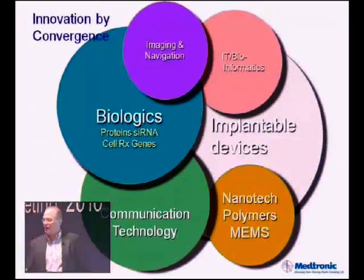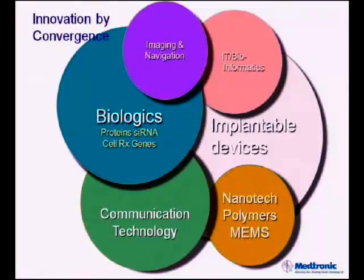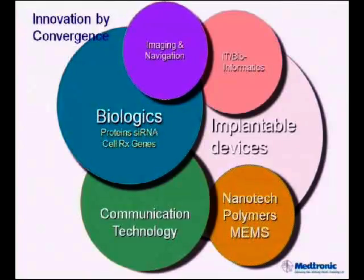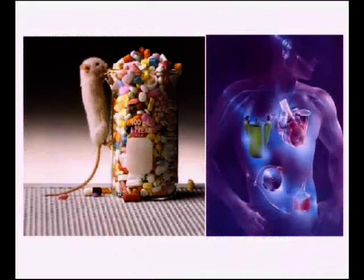Technological convergence can take on many forms—the combination of any of these circles designated here: biologics, communication technology, imaging, navigation, bioinformatics, implantable devices, nanotech polymers, and material science. All combinations can be included in technological convergence.